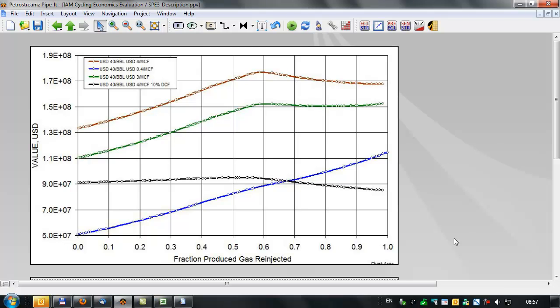From that assessment, here we've got total value, either discounted or not discounted, versus the amount of the produced gas that's being re-injected. So here we'll basically represent depletion and this would represent full gas injection, near pressure maintenance.